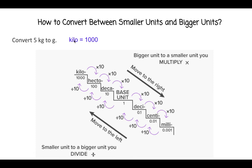Kilo means a thousand, so we're going to take our number and multiply it by 1,000. Five kilograms times 1,000 gives us 5,000 grams. So our answer is 5,000 grams.